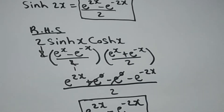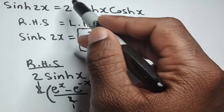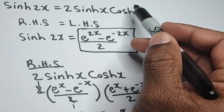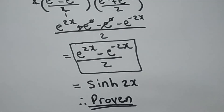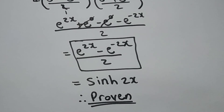That's how we prove that hyperbolic sine of 2x is equal to 2 times hyperbolic sine of x times hyperbolic cosine of x. Hopefully you were able to follow this proof. This is where we'll end today's video. Don't forget to give this video a thumbs up, please subscribe to the channel and hit that notification bell to be notified when I post new videos.